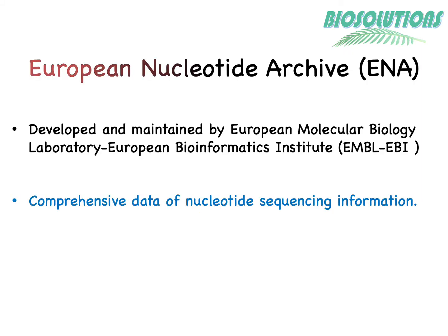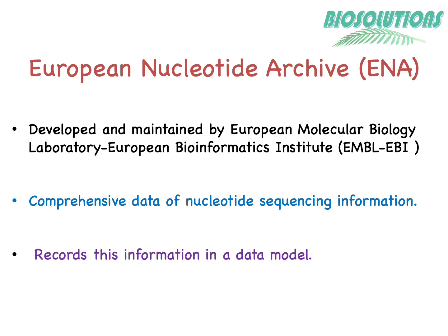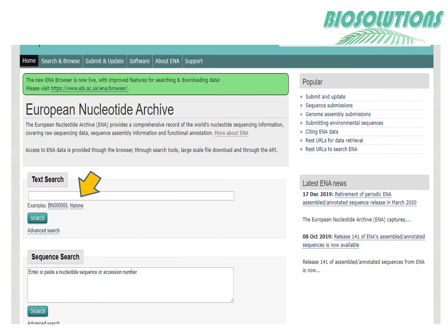ENA, the European Nucleotide Archive, is developed and maintained by the European Molecular Biology Laboratory at the European Bioinformatics Institute, also known as EMBL-EBI. ENA contains comprehensive data of high-level genome assemblies, assembled sequences, and their functional annotation from around the world. The EMBL bank is a nucleotide sequence database and is a part of ENA.